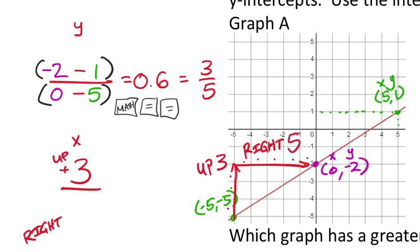I went to the right five—my run to the right five, which is positive. That gives us three-fifths. You can see we have the same value. That's up 3, right 5—which is my rate of change for graph A. We also found the y-intercept at (0, -2).